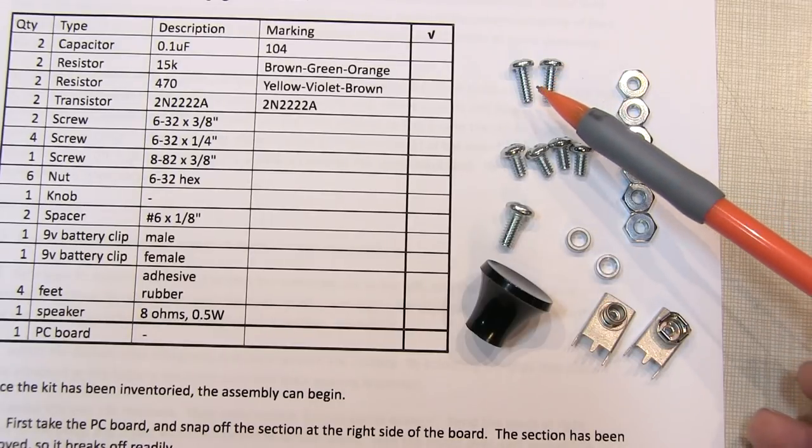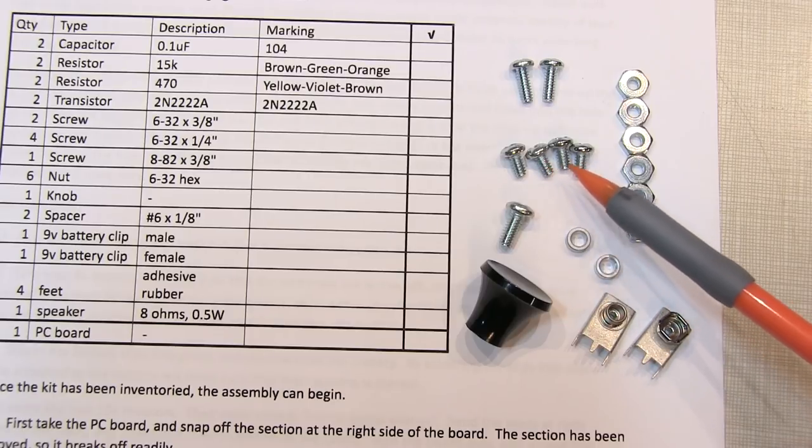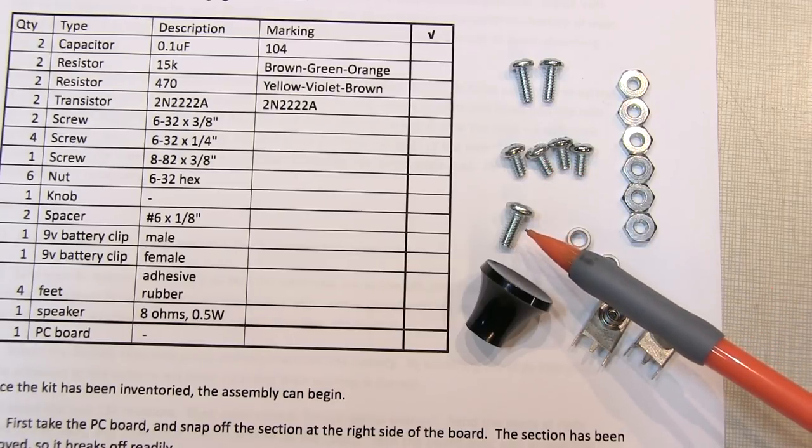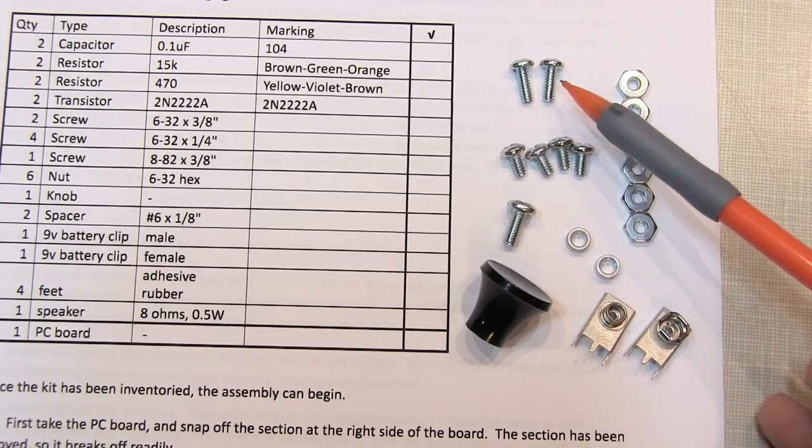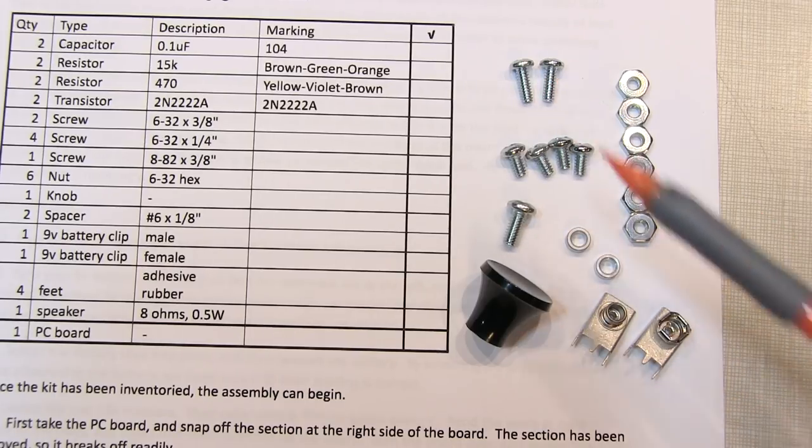You should have a pair of 6-32 by 3/8 screws, four 6-32 by 1/4 inch screws, one 8-32 by 3/8 inch screw, just slightly larger in diameter than the number six screws here.